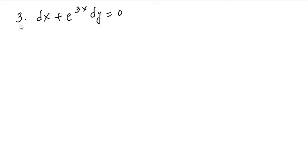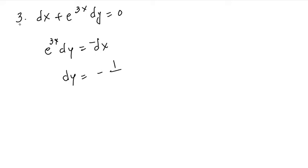Here we have the third question of Exercise 2.2. In this question you can move dx to the other side of the equal sign. Since I want y on the left side, you will have minus dx on the other side. Now you can divide e raised to power minus 3x on both sides of the equation, and you will get dy on this side and minus 1 by e raised to power 3x dx on the other side.